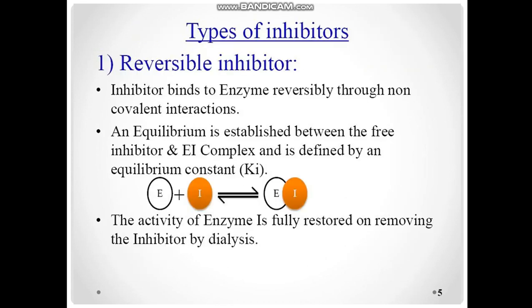The first type is reversible inhibitors. An inhibitor which binds to the enzyme's binding site reversibly through a non-covalent interaction — non-covalent means weak bond. An equilibrium is established between the free inhibitor and the enzyme-inhibitor complex, defined by an equilibrium constant Ka. The activity of the enzyme is fully restored on removing the inhibitor by dialysis.